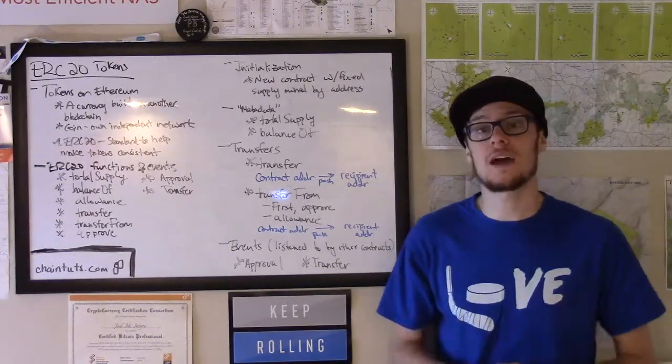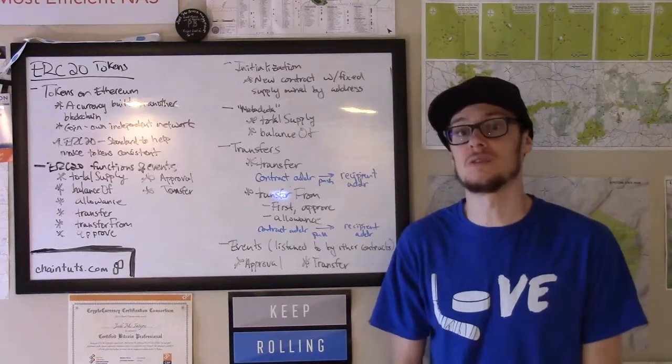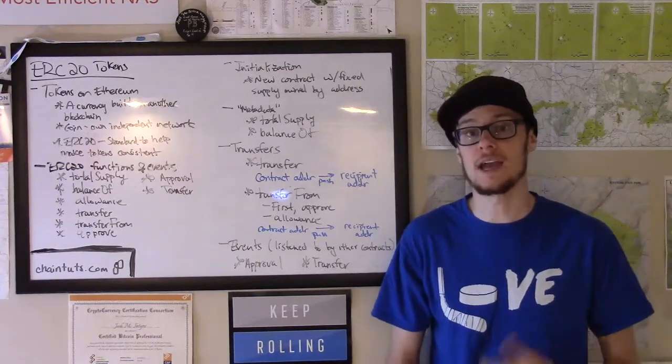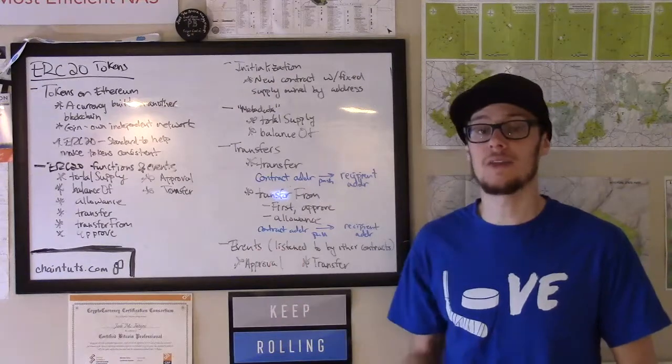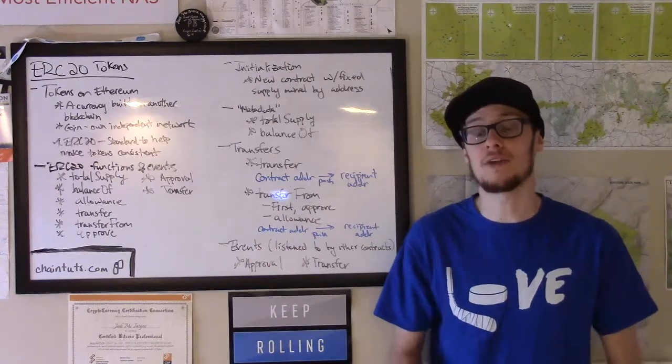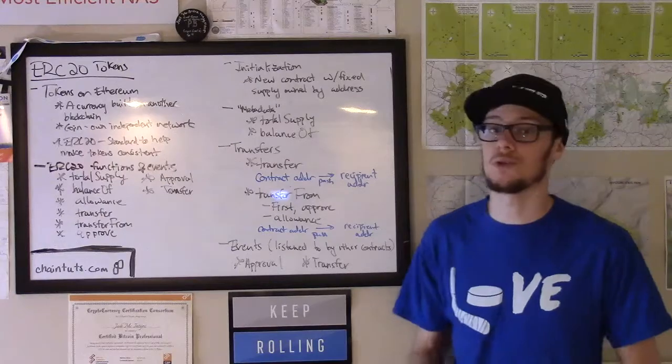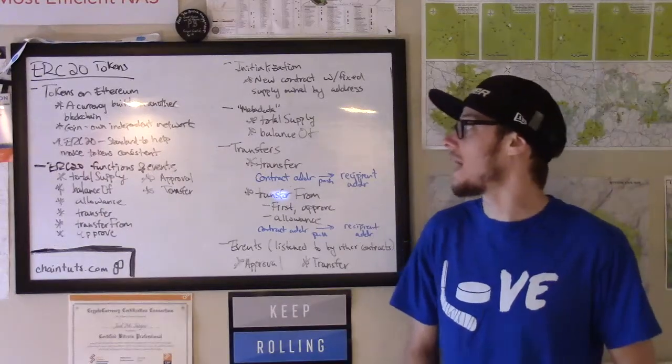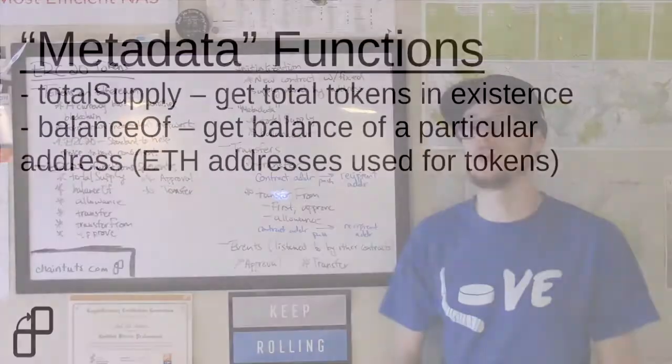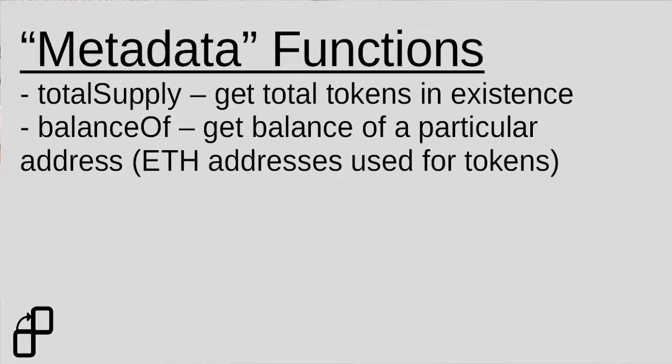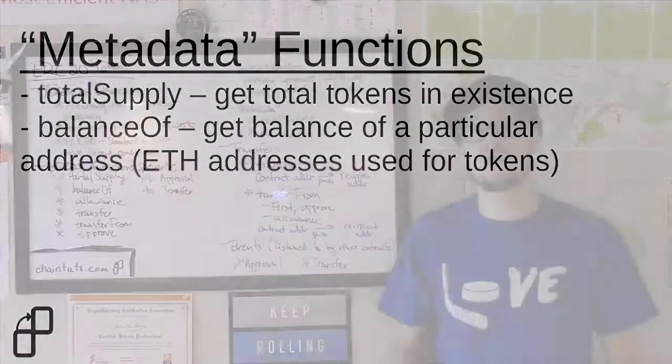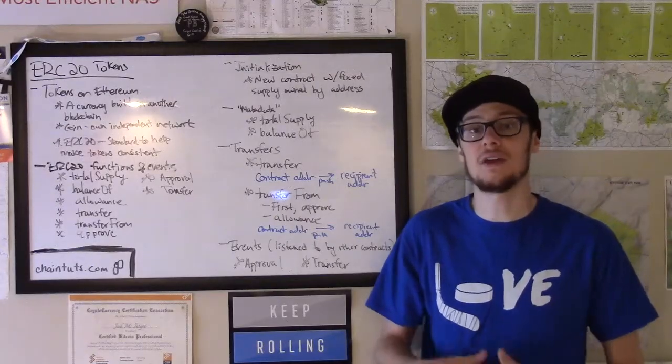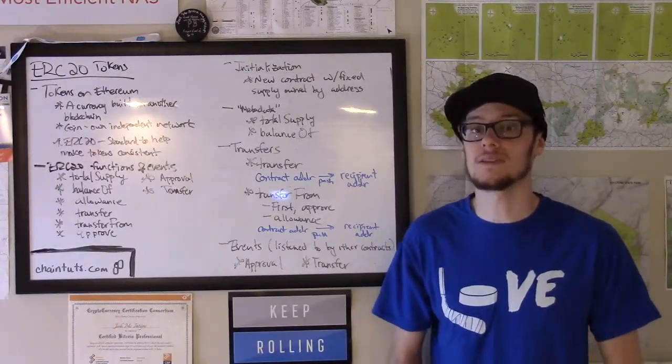There are two different types of metadata functions that can be called on this smart contract by creating a transaction and including in the data field, Ethereum bytecode calls to these particular functions. We can get the total supply of the tokens, the total amount of tokens that are available. And you can also request the balance of a specific address. Now with most tokens on the Ethereum network, the addresses are the same as the Ethereum addresses, keeping things simple and consistent.